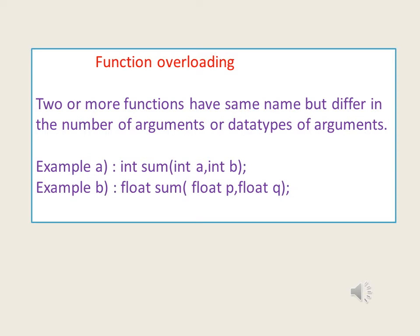For example: int sum(int a, int b) and float sum(float p, float q). The name of the function is the same. In the first example, it returns an integer value; in the second, it returns a float. I am passing two arguments in both cases, so the number of arguments is the same, but the data types of the arguments are different — int a and int b versus float p and float q. This is just an idea of how to write an overloaded function.